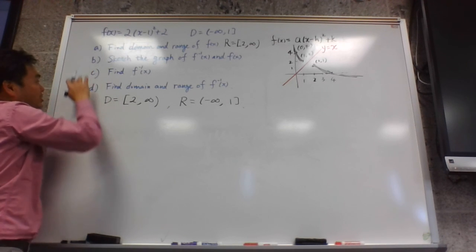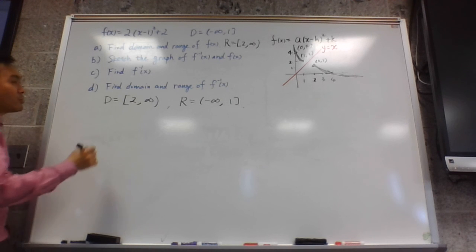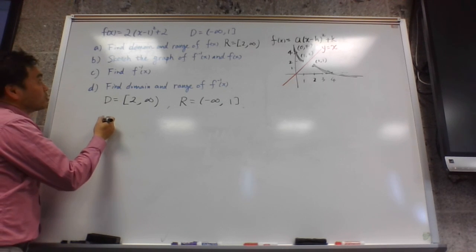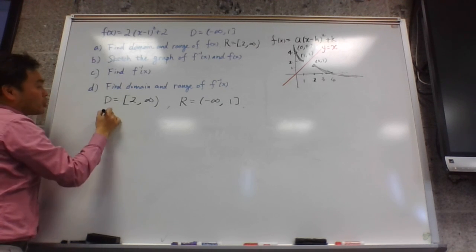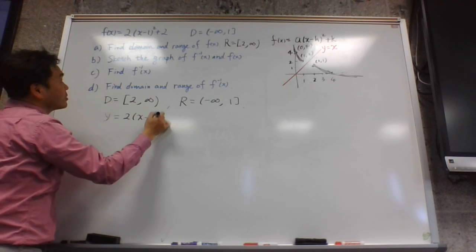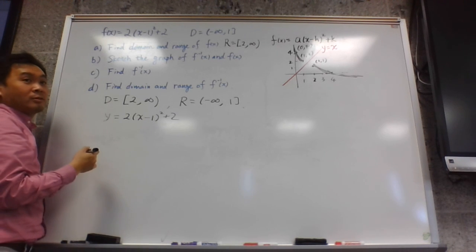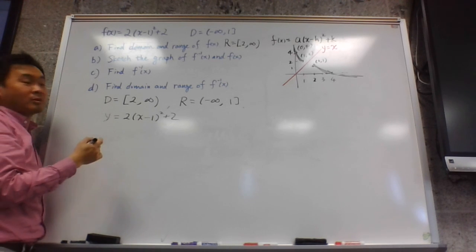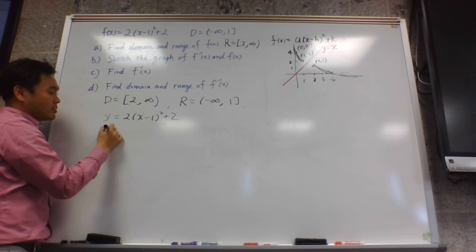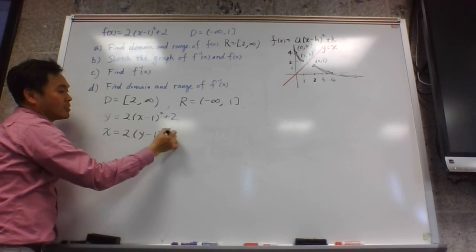So we're done with a, we're done with b, we're done with d. The only thing we have to do is f inverse. Now, let's try this. We first introduce y for f of x. Then what do you do? What's the next step? x and y switches.